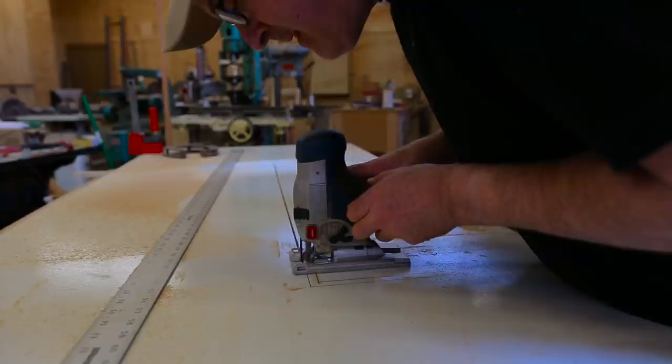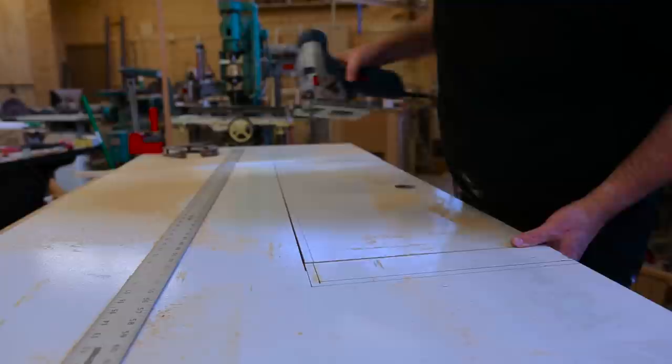Once I cut the sides with the circular saw, I could do the corners with the jigsaw and cut out the center piece.